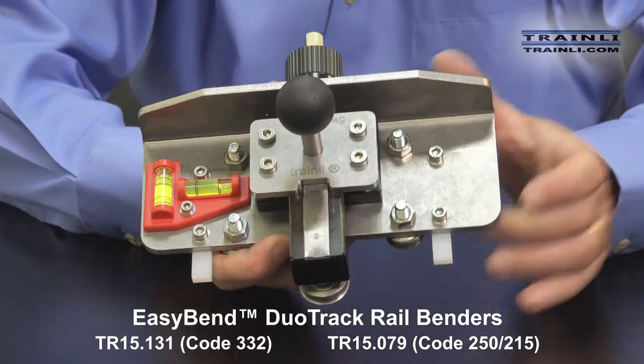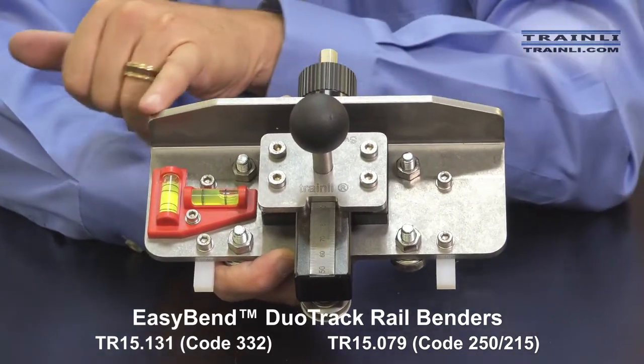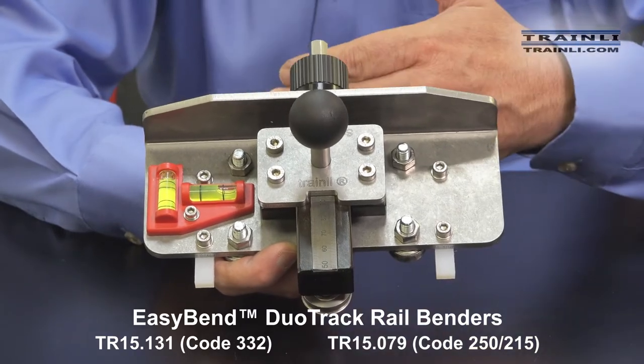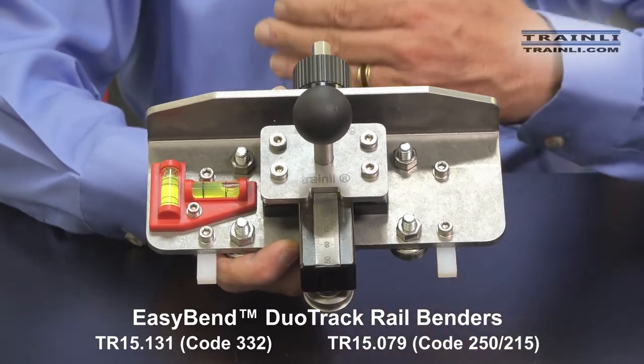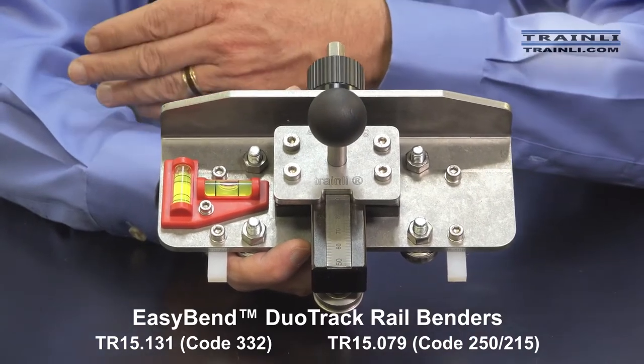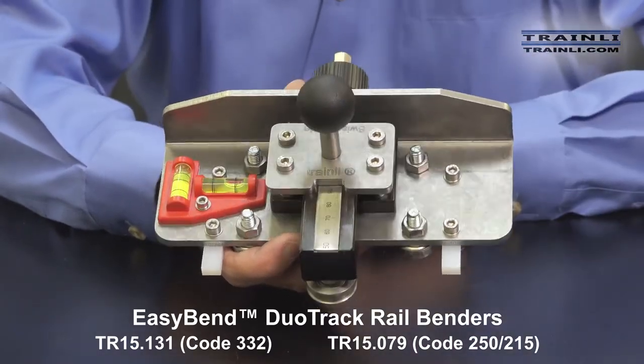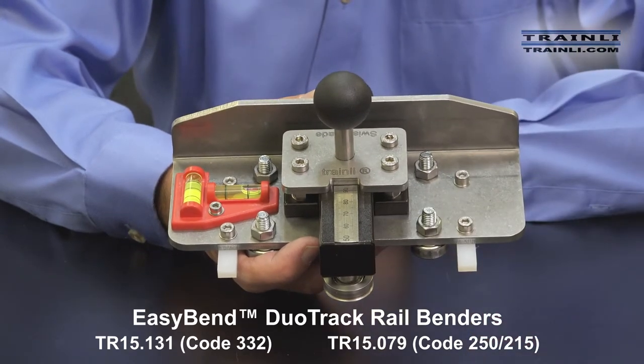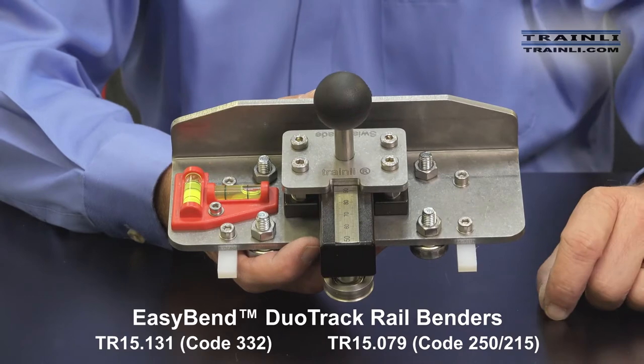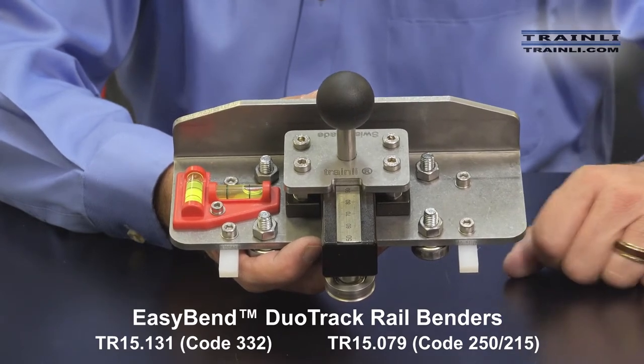A couple of minor modifications is we trim the edges here to make it a little bit more lower profile, which makes it easier to work in tighter places as you're laying your track, if it's going through a trestle, or a bridge, or a tunnel, or something like that. Also, we've anodized this rod here, which gives a nice contrast to the numerical values here. It makes it easier to see, especially if you're working outside.